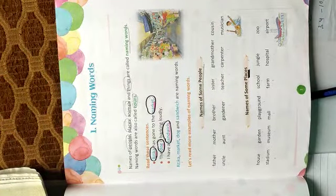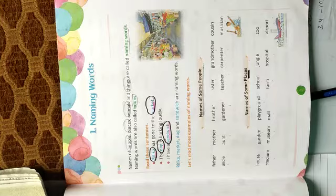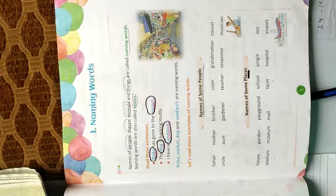Names of people, places, animals and things are called naming words. Naming words are also called nouns.